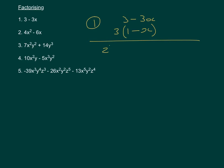Number 2 is 4x² - 6x. We can divide both coefficients by 2, and both terms contain x, so we take out 2x. Inside the bracket, 4x² divided by 2x gives 2x, and 6x divided by 2x gives 3, leaving us with 2x(2x - 3).